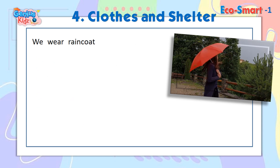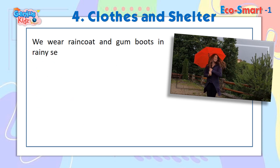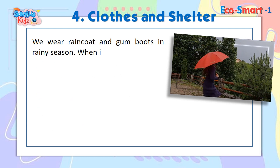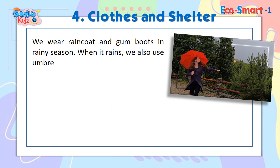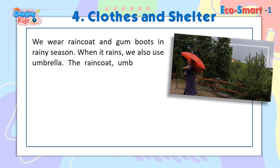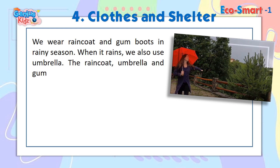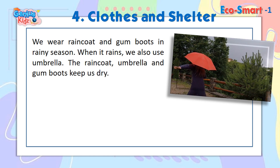We wear a raincoat and gum boots in the rainy season. When it rains, we also use an umbrella. The raincoat, umbrella, and gum boots keep us dry.